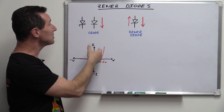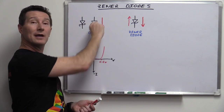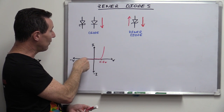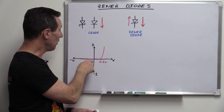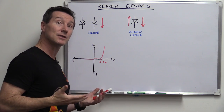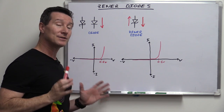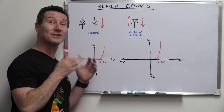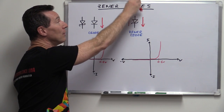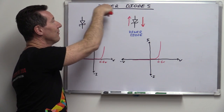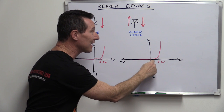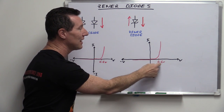And if you reverse bias it and put a negative voltage on — going on this side of the curve — no current flows. It just stays flat like that. Now, a Zener diode works exactly the same as a regular diode when you forward bias it, with current going forward, and you get exactly the same characteristic response.